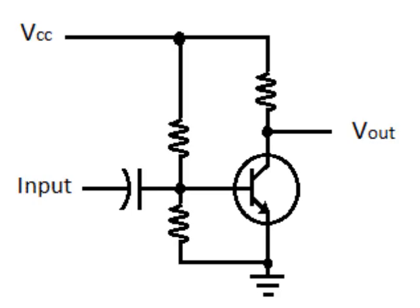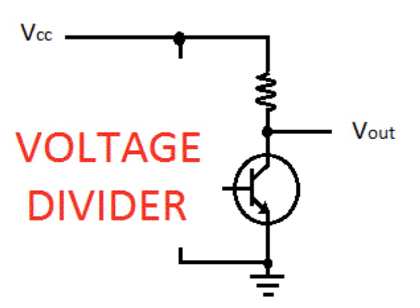No, no, stop, step back. What is this circuit? This circuit is a voltage divider where I have replaced the lower resistor with a transforming resistor, a resistor whose value changes - a transistor.